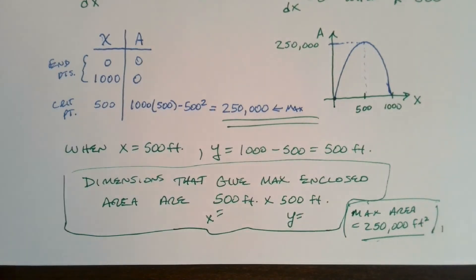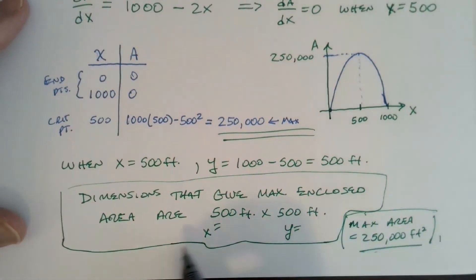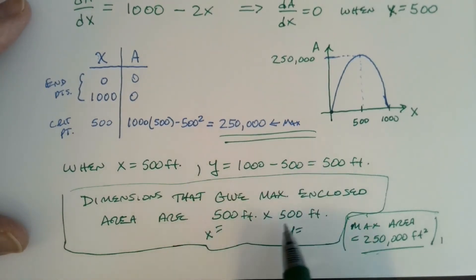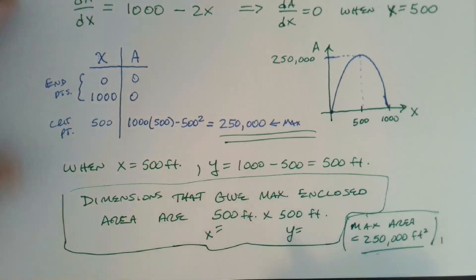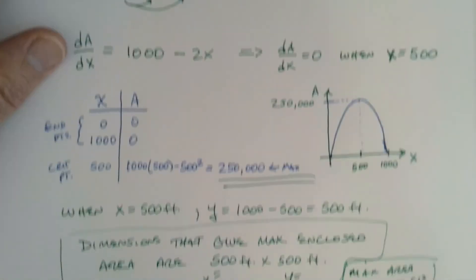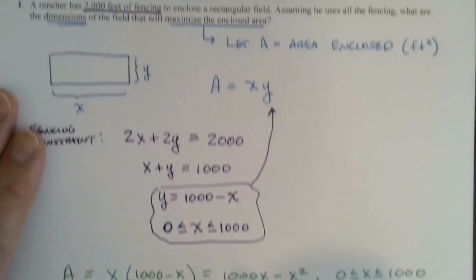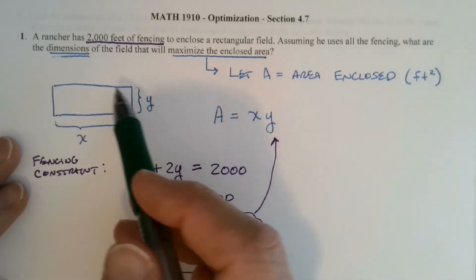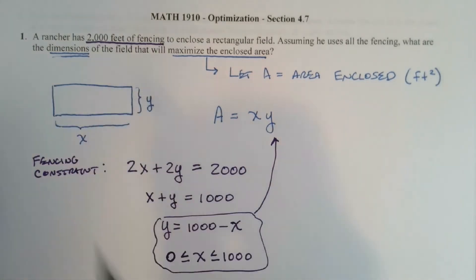An important observation: we get maximum area when x = y — that is, when the rectangle is a square. This is a general principle: given a fixed perimeter, the area enclosed is maximized when the shape is a square.